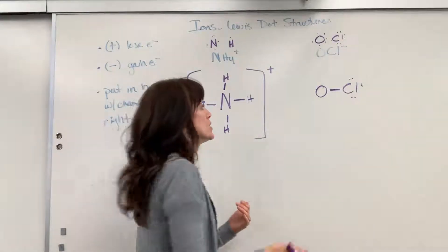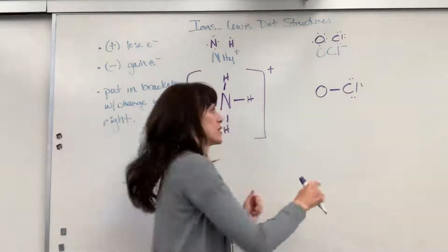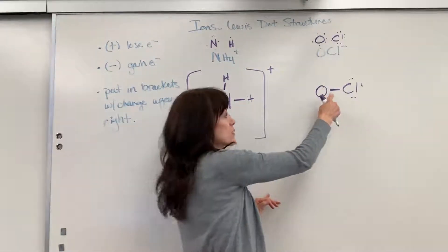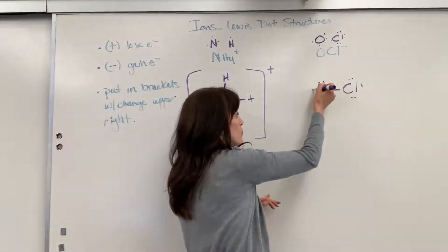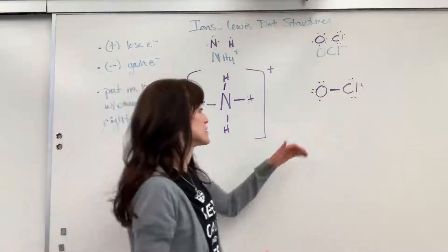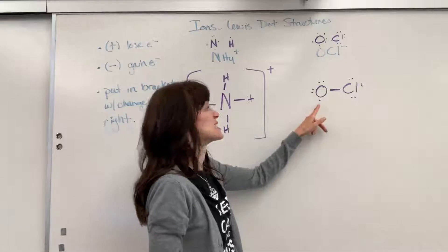Now let's look at the oxygen. So the oxygen has six valence electrons. It shared one electron, and then to make its other six, there would be one, two, three, four, five, six. Now if we check it, the oxygen senses two, four, six, seven.